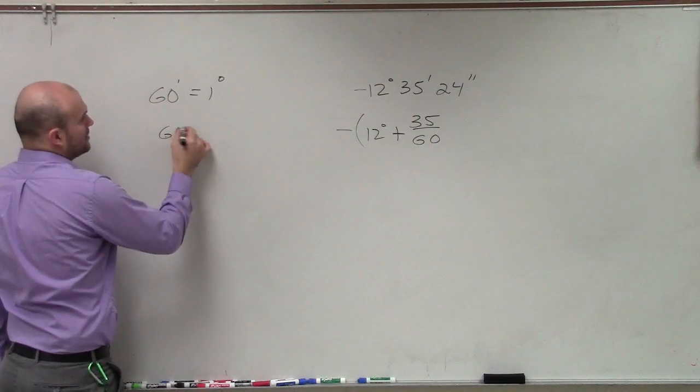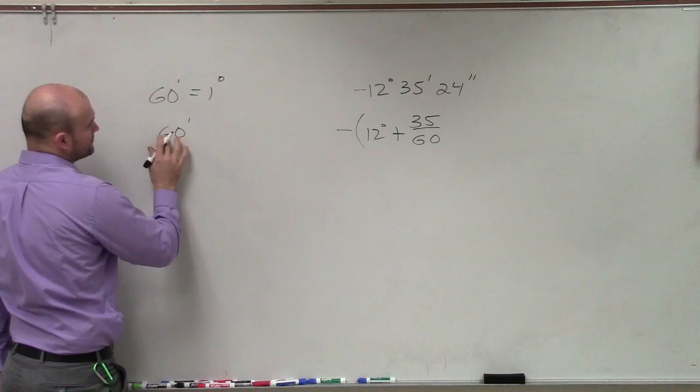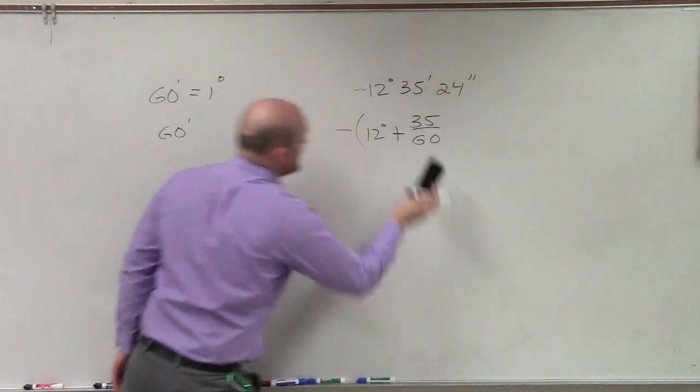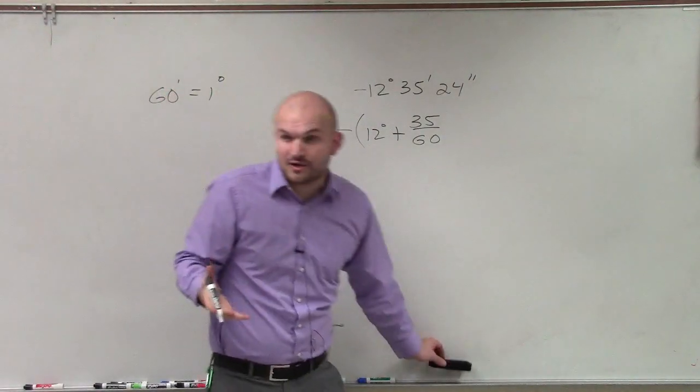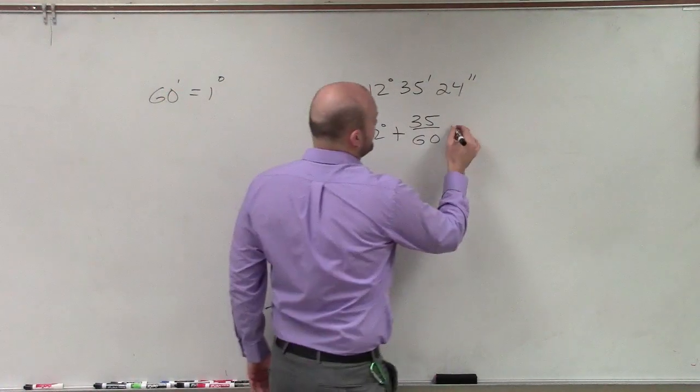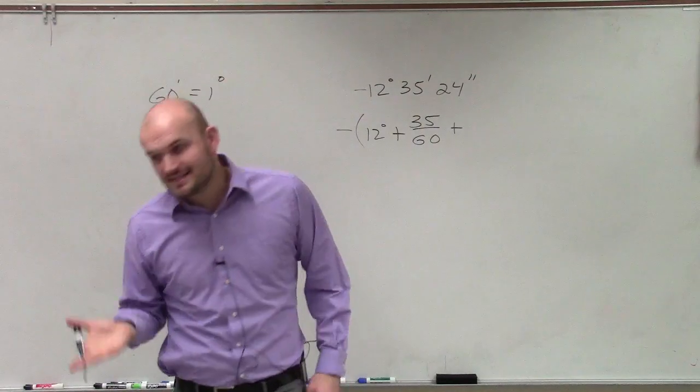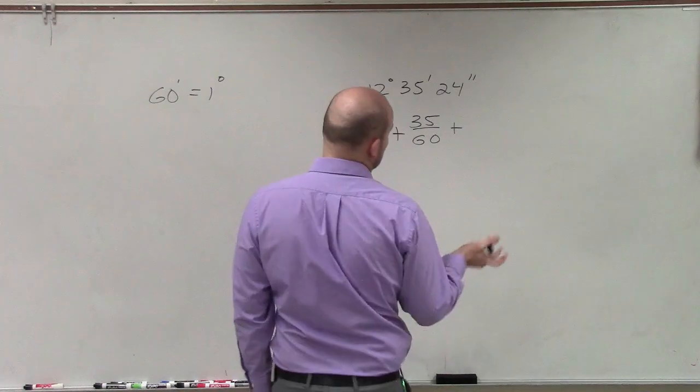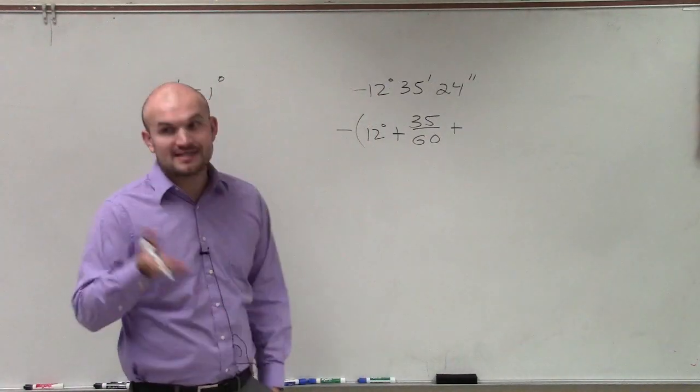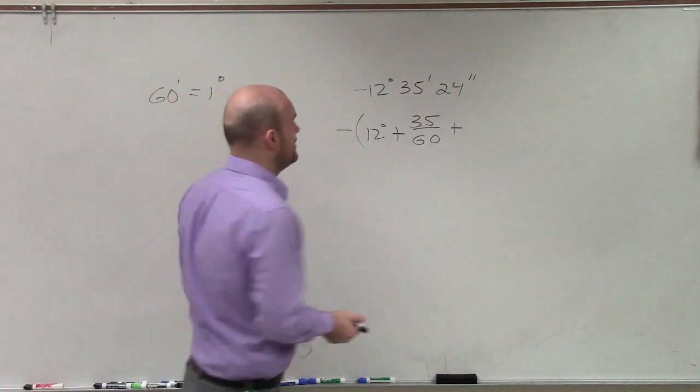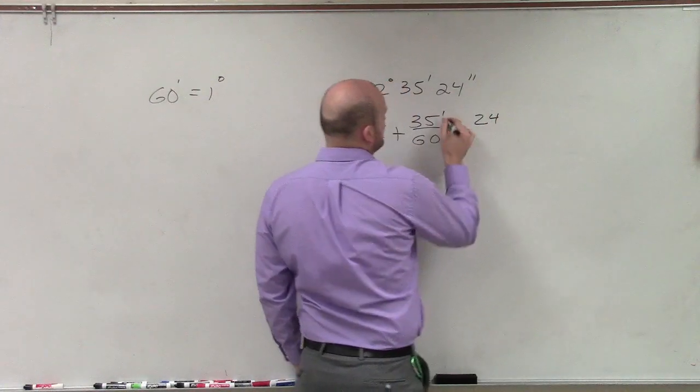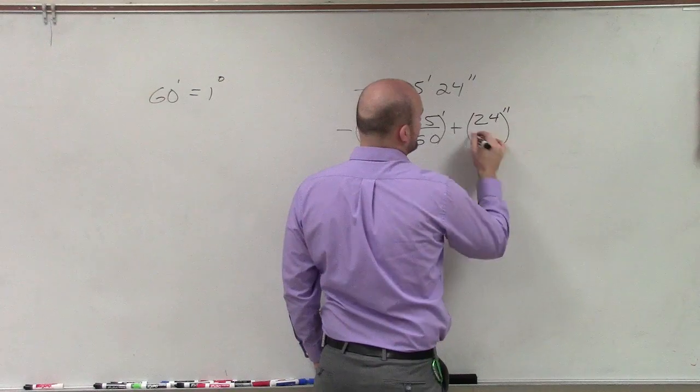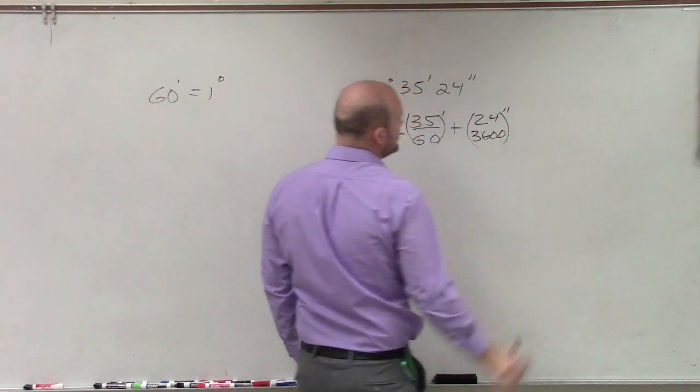So if I wrote 60, it actually would have been the same. So if I have 35 over 60, that is a fraction that we can convert to a decimal. Plus, now there's 60 seconds in 1 minute, and we only have 24 seconds. So if there's 60 seconds in 1 minute, and 60 minutes in 1 degree, therefore this is going to be 24 seconds over 3600 seconds.